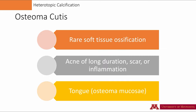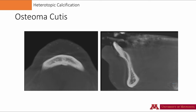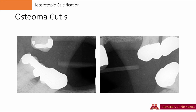Osteoma cutis is a rare ossification of the cutaneous tissues. This may appear in areas of chronic acne, scar, or inflammation. Although most common on the facial skin, sometimes we see osteoma in the tongue or in the mucosal layer. Osteoma cutis is very faint. The left image is an axial view at the level of the mandibular symphysis, and the right image is a sagittal view at the midline — the arrows point to areas of osteoma cutis. The radiographs of the soft tissues of the cheek show multiple osteoma cutis, with only a few highlighted by yellow arrows.